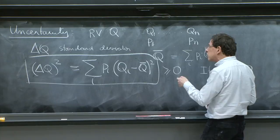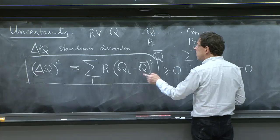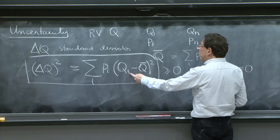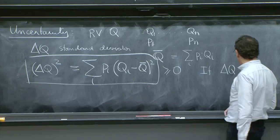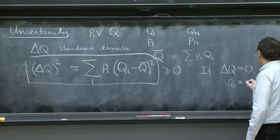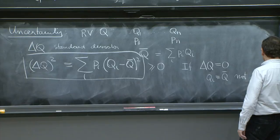But each term here is positive. So each term must be 0. Because if any one of them was not equal to 0, you would get a non-zero contribution. So any possible qi that must have a pi different from 0 must be equal to q bar. So if delta q is equal to 0, qi is equal to q, and it's not random anymore.